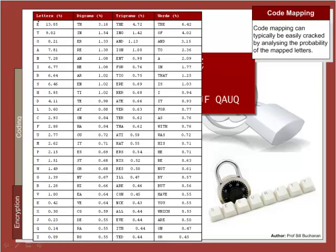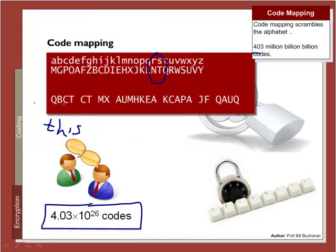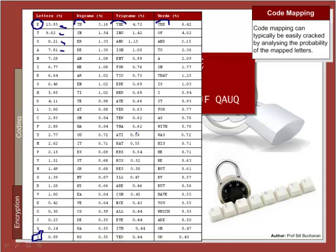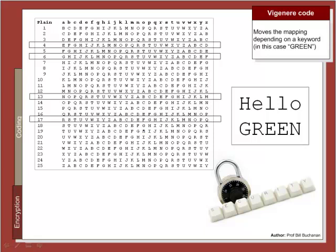Unfortunately, the English alphabet has a varying probability for each letter. For example, E is the most probable and Z is the least probable in UK English. Along with this there are 2-letter and 3-letter occurrences and common words. So it is possible to look up the probabilities of each letter and try to match them with the ciphertext. In this case we would probably find that the letter E is coded as A, since it is a highly probable letter — so we could guess that.